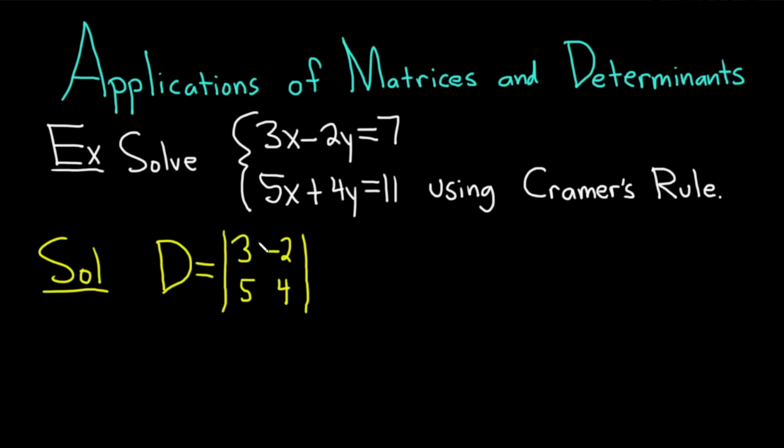3, negative 2, 5, 4. Now we can go ahead and compute big D. So to compute D, you basically use the formula for determinants, which basically says you multiply the 3 and the 4. So 3 times 4 minus, and then you multiply the negative 2 times the 5. This is equal to 12. There's a double negative, so it becomes positive, and then we have our 10. 12 plus 10 is 22. So we have big D.